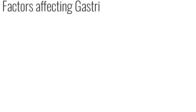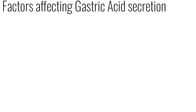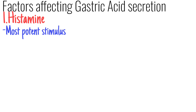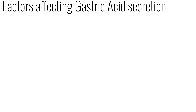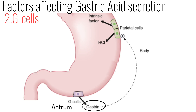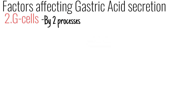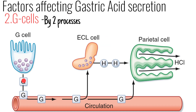What are the factors affecting gastric acid secretion? First, histamine is the most potent stimulus for the parietal cells to release HCl by stimulation of the hydrogen-potassium ATPase pump. Second, G cells or gastrin cells of pyloric glands near the antrum of the stomach release gastrin hormone that facilitates HCl release by two processes: it stimulates the enterochromaffin-like cells to release histamine, and it can directly stimulate the parietal cells.